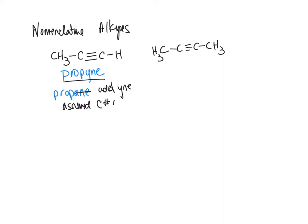What about this one? How many carbons? One, two, three, four. So your longest chain is butane. We drop the '-ane' and write '-yn.' Your carbon triple bond is on carbon two. You have to give the alkyne the lowest number in the chain, and the chain needs to go through the triple bond.